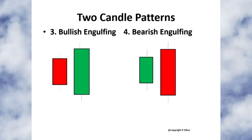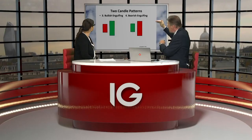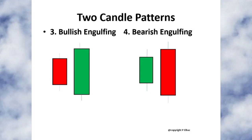The reverse of the harami is the engulfing candle — the second day of the two-day pattern is larger than the previous day. For it to be truly engulfing, you have to cover the whole range of the previous candle. Comparing to bar charts, it's like a key reversal day or key reversal week — you're reversing the previous activity. I've seen so many engulfing patterns that have worked very well on charts. The body of the second candle has to be bigger than the previous day's body, and you also have to go through the whole highs and lows — you have to engulf the whole range.